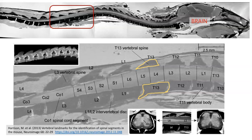While humans have 12 thoracic segments, mice have 13, and there is a corresponding 13th spinal segment. You can see that it's not lined up with the vertebrae — the part of the spinal cord lying near T13 is actually the 4th and 5th lumbar spinal segments. The nerve from the 13th segment will still travel down and exit between the T13 and L1 vertebrae.